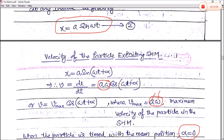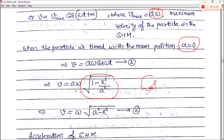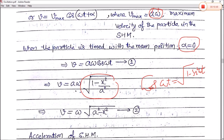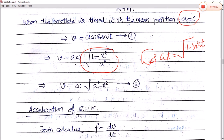When α equals 0, we have x equals a sin ωt. Solving for sin ωt gives sin ωt equals x/a, so cos ωt equals √(1 minus x²/a²). Substituting: v equals Aω√(1 minus x²/a²). Multiplying inside the root by a²/a² and simplifying, the final expression for velocity is v equals ω√(a² minus x²).